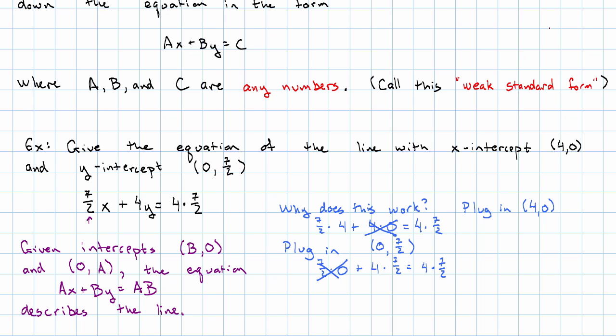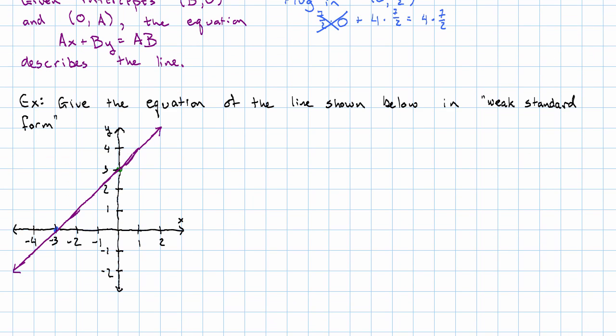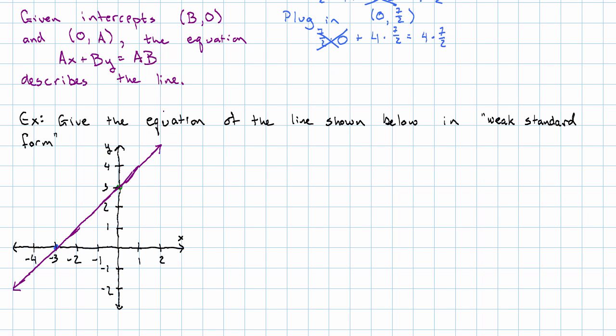Let's see another example. We want to give the equation of this line in this weak sort of standard form. The x intercept is at negative 3, 0 and the y intercept is at 0, 3. Where do we see that? Here's negative 3, 0. Here's 0, 3. And so following the recipe, the y intercept gives the coefficient of x, the x intercept gives the coefficient of y.